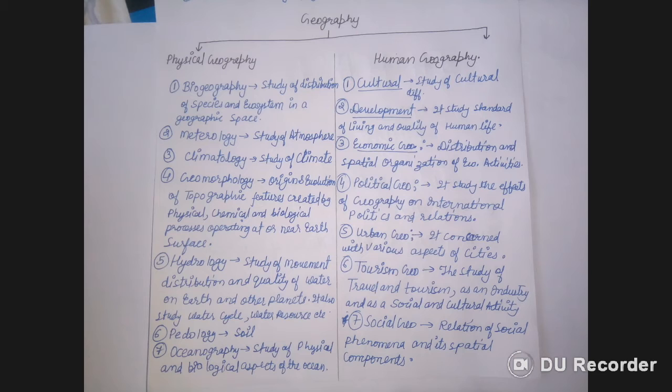Biogeography is one of the major branches of physical geography. The second branch is meteorology — the study of the atmosphere. Third is climatology — the study of climates. Fourth is geomorphology — the study of the origin and evolution of topographic features created by physical, chemical, and biological processes operating at or near the Earth's surface.